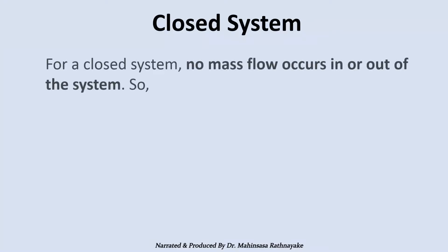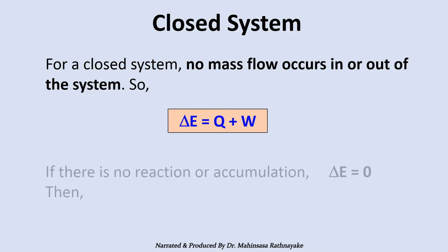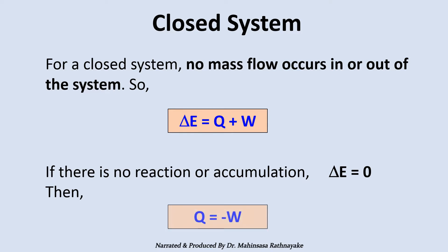For a closed system, no mass flow occurs in or out of the system. So delta E is equal to Q plus W. If there is no reaction or accumulation, delta E is equal to zero. Then the energy balance equation simplifies into Q is equal to minus W.